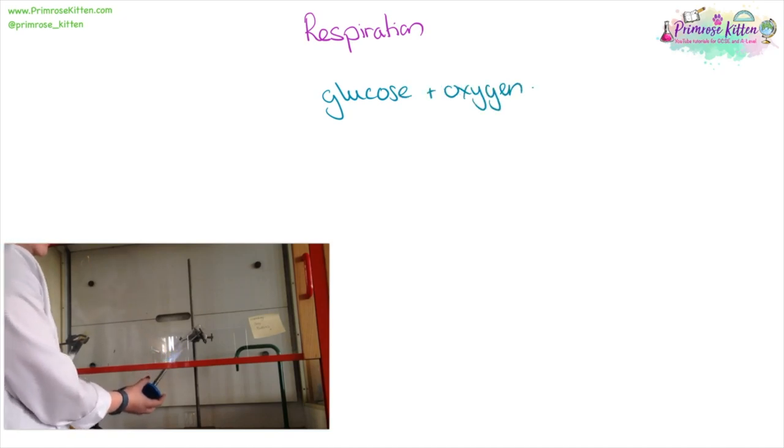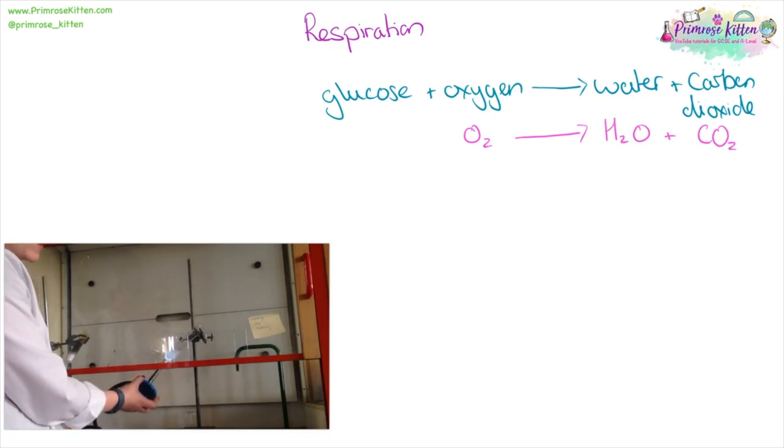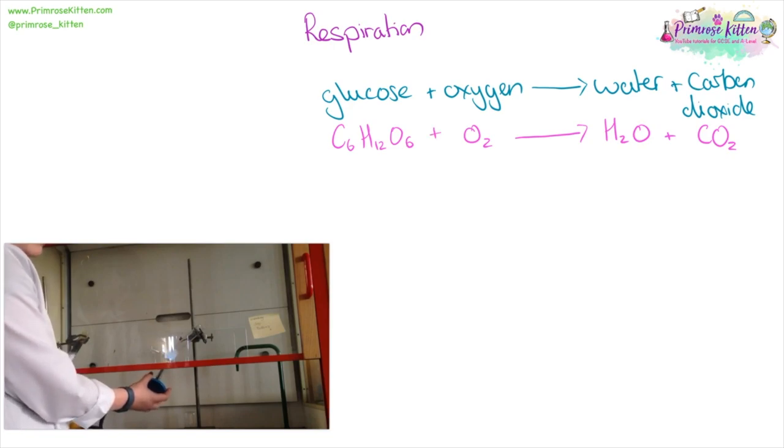For respiration we are going to take glucose, add it to oxygen, and come out with water and carbon dioxide. You need to know the symbols for these. So oxygen is O2, water is H2O, carbon dioxide is CO2, and glucose is C6H12O6. This needs to be balanced but it is a nice easy one - 6, 6, 6. You have to make sure your numbers are the right size and in the right place. So these ones need to be little numbers and these ones need to be big numbers.